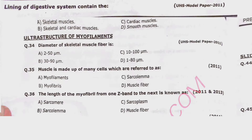Question 33: The lining of the digestive system contains which muscle type? Options: skeletal muscle, skeletal and cardiac muscles, cardiac muscles, or smooth muscles. Correct option is delta — smooth muscles. Question 34: The diameter of skeletal muscle fiber is 2–50 micrometers, 30–90 micrometers, 10–100 micrometers, or 1–80 micrometers. Correct option is charlie — 10 to 100 micrometers.